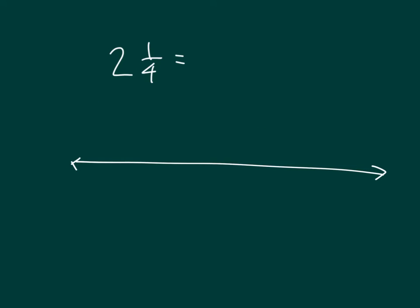2 and 1 fourths. Let's figure out how many fourths 2 and 1 fourths is equal to. We'll break it apart into its wholes and into its fractional parts. The wholes, or the ones within this number, there are 2 ones within this number.